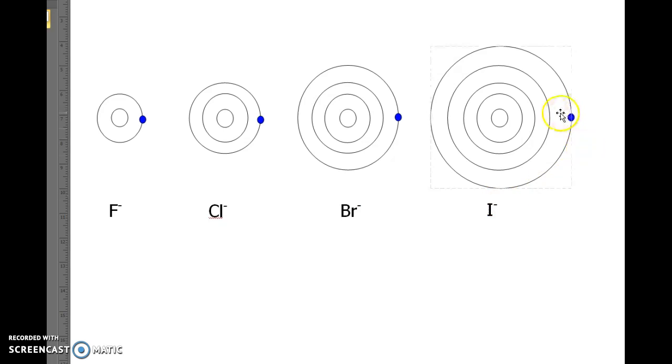Finally, iodide, with all of these inner shells of electrons, the radius is very far away. Therefore, there is a very weak attraction between this electron and the nucleus.